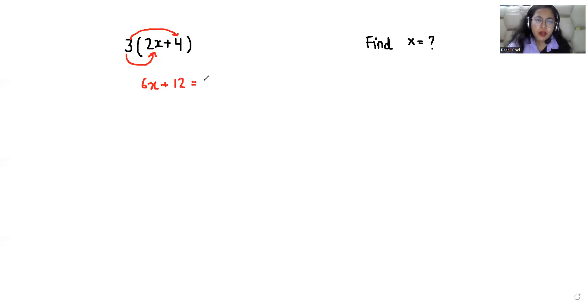Only then we can find the value of x. So 6x equals, 12 goes to other side and becomes minus 12. x equals minus 12 by 6. x equals minus 2.